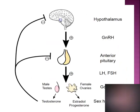Let us see the hypothalamus-pituitary-ovarian axis. The hypothalamus in the brain is the higher center. It secretes gonadotropin-releasing hormone, which stimulates the anterior pituitary to secrete luteinizing hormone and FSH. LH and FSH stimulate the ovaries to secrete estrogen and progesterone. When there is enough estrogen and progesterone in circulation, they have a negative feedback effect on the anterior pituitary and hypothalamus, limiting further secretion of LH and FSH.